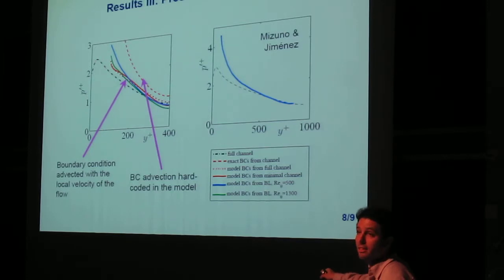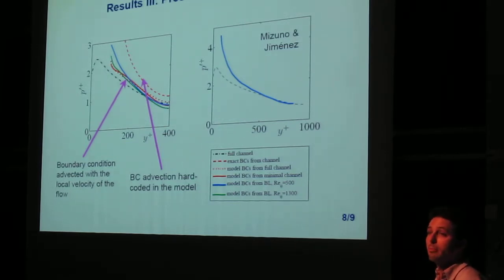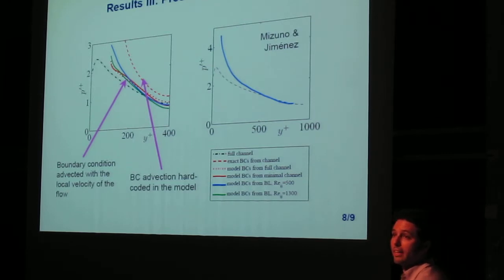And how we managed to mitigate it quite a lot is by making sure that the advection of the boundary condition matches exactly the advection of the flow just above, so that they can travel together and adapt to each other and reduce the pressure fluctuation.